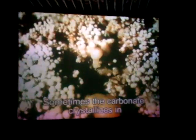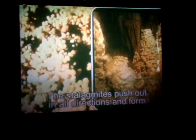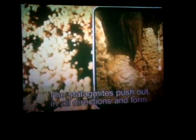Puddles sometimes form in depressions on the floor of the cave and get covered over by calcareous deposits. Sometimes the carbonate crystallizes in an unordered manner. The stalagmites push out in all directions and form coral-like aggregates, called choralatites.